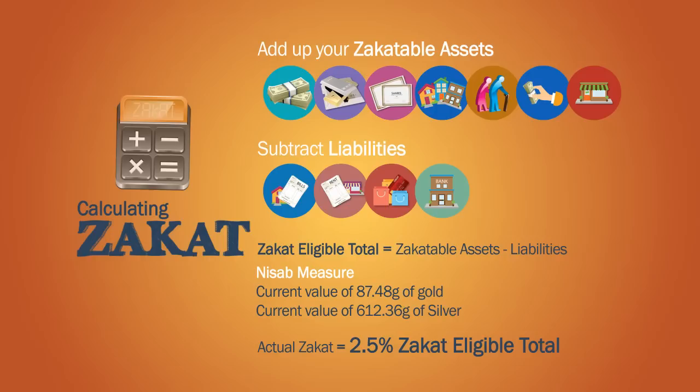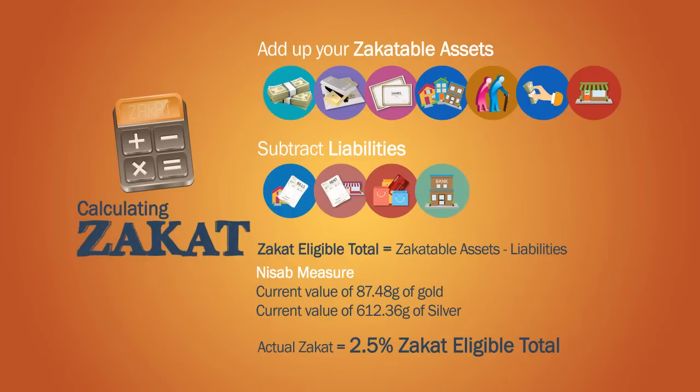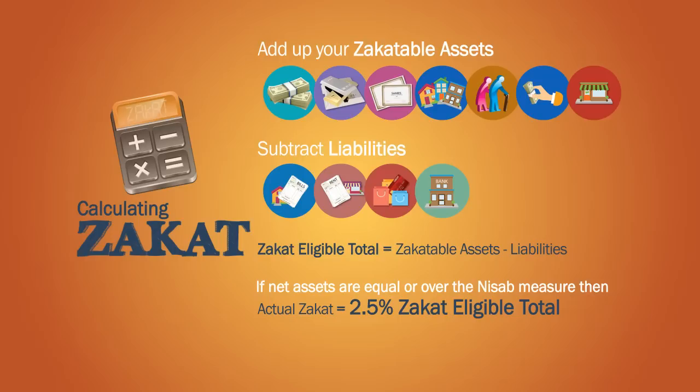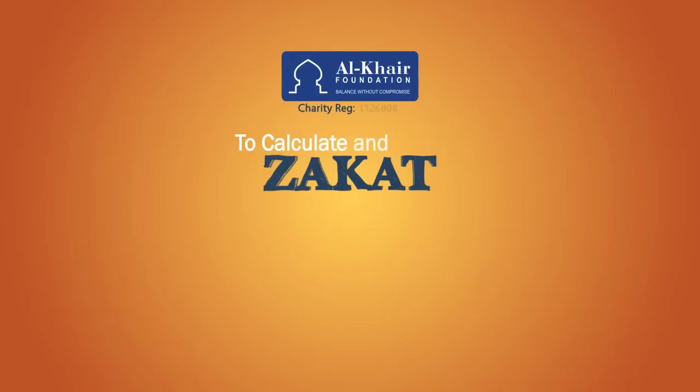If you have mixed assets, which is most likely, you should use the nisab measure for silver, which will be the current value of 612.36 grams of silver. If your net assets are equal to or over the nisab, then zakat is due on 2.5% of your total net assets. With this final figure, you now know how much you need to pay.